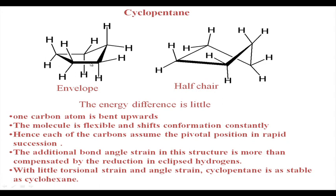In the envelope conformation, four carbon atoms are in a plane and one carbon is up — this is called the flap of the envelope. The carbon occupying the flap is not fixed; it goes down and then the next carbon goes up, becoming the new flap. So the flap oscillates between all the carbon atoms.